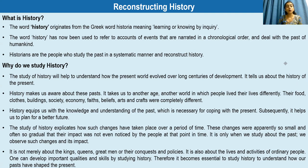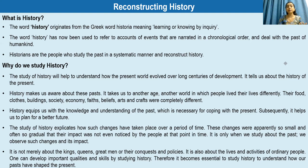Now, who are known as historians? The people or those persons who try to make a systematic effort to study the past, they are known as historians. Historians are those people who attempt to have a systematic, organized study about the past and they try to reconstruct our history.